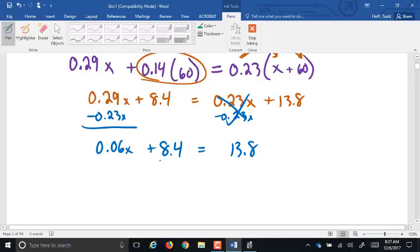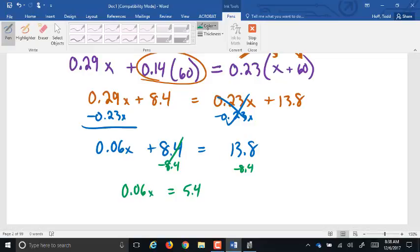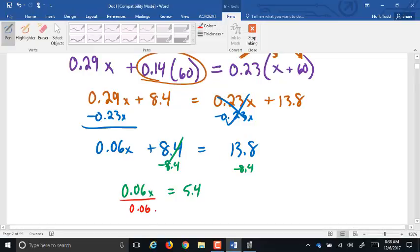Now, we have to subtract 8.4. 0.06X equals 5.4. And then, divide by 0.06. X equals 90.